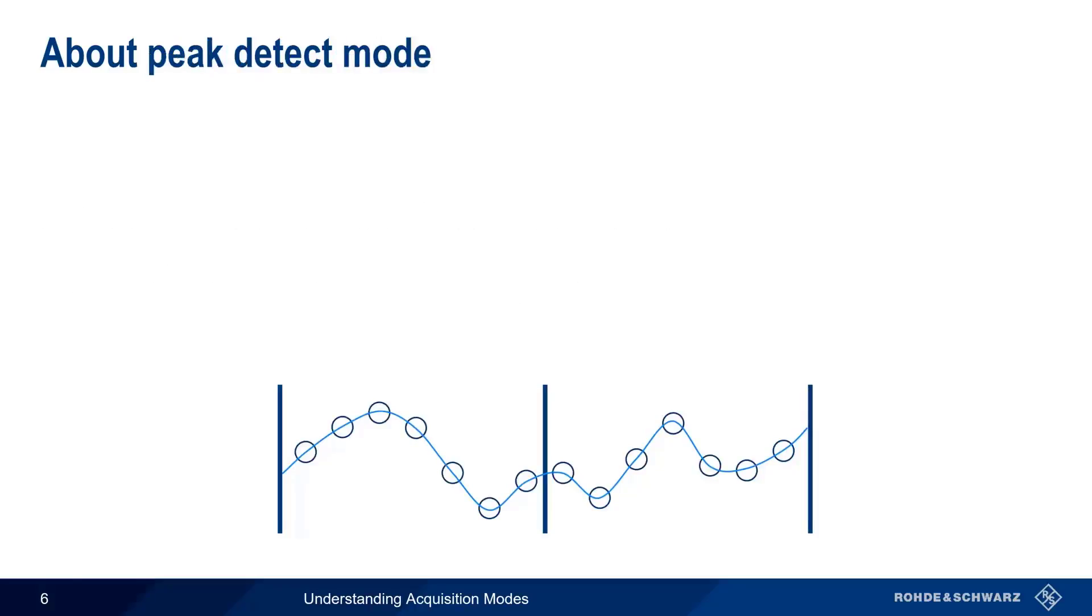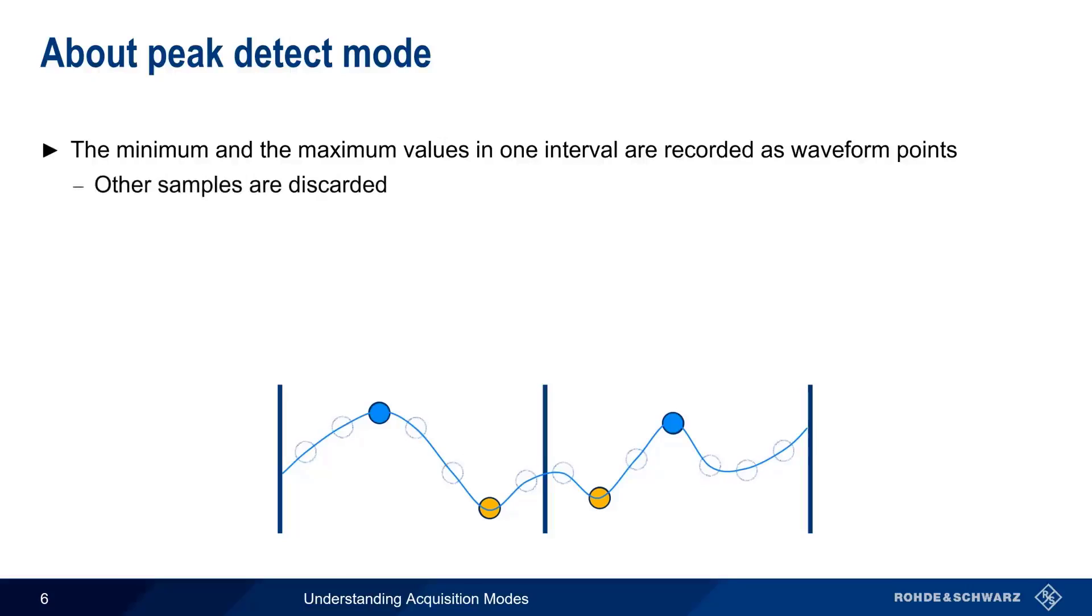The next mode we'll look at is peak detect mode. In peak detect mode, the maximum and minimum values from each interval or group of samples are recorded as the waveform points. And as before, the other samples are simply discarded.